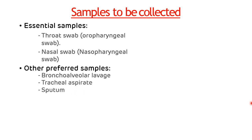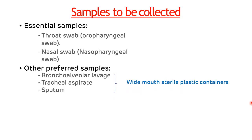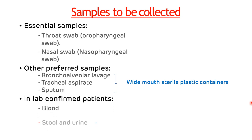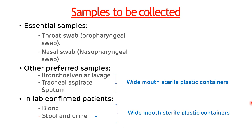All these samples should be collected in wide-mouth sterile plastic containers. In lab-confirmed patients, blood samples, urine, and stool samples can also be collected, and should again be collected in wide-mouth sterile plastic containers. These cover the various samples which can be collected in COVID-19.